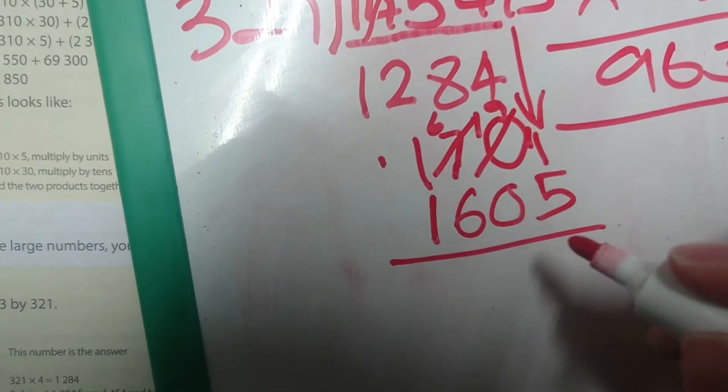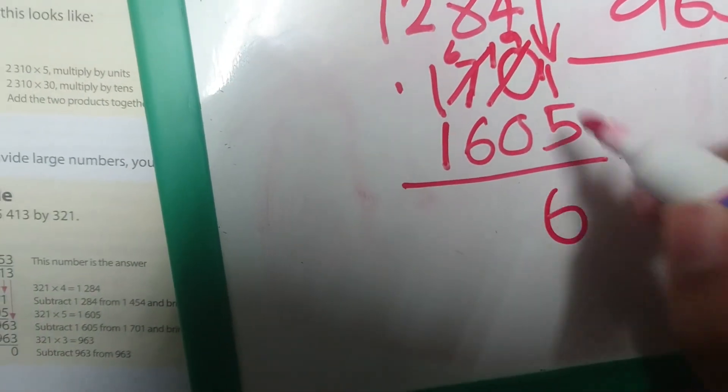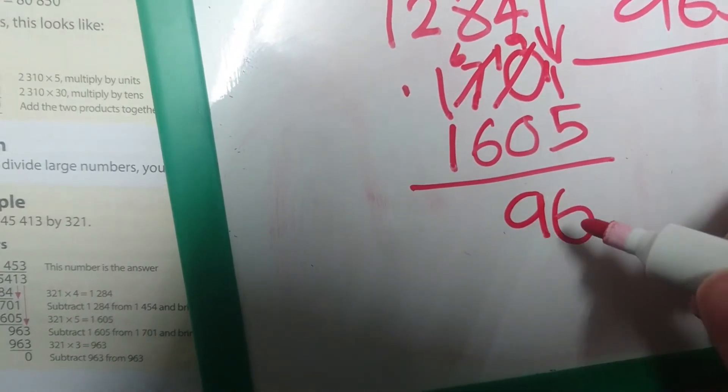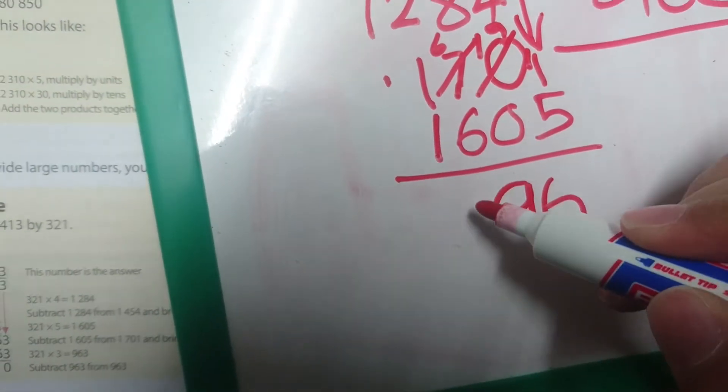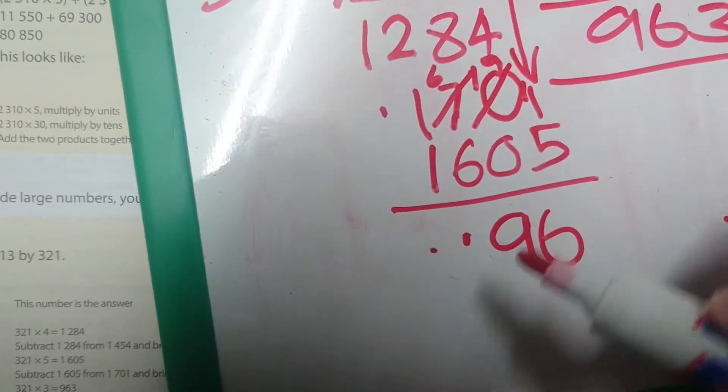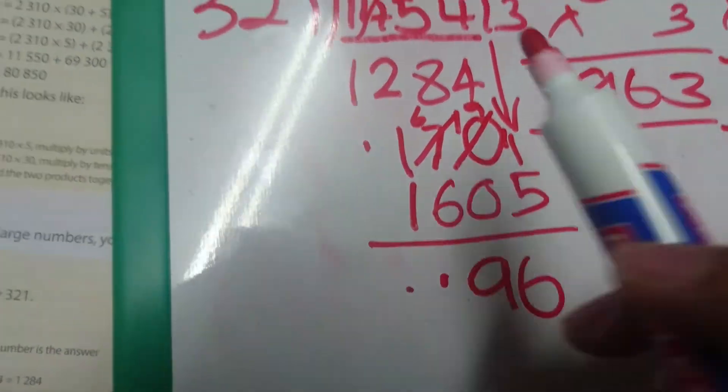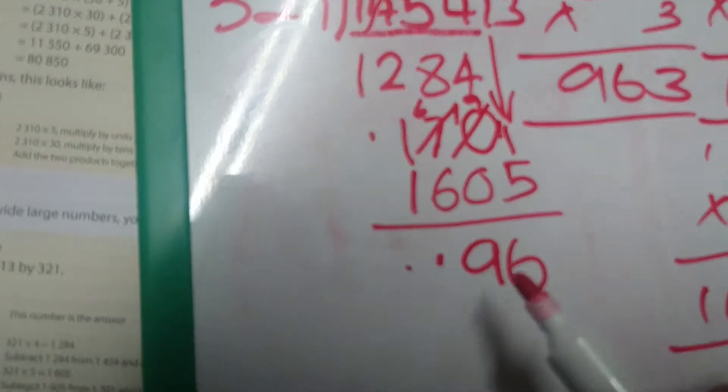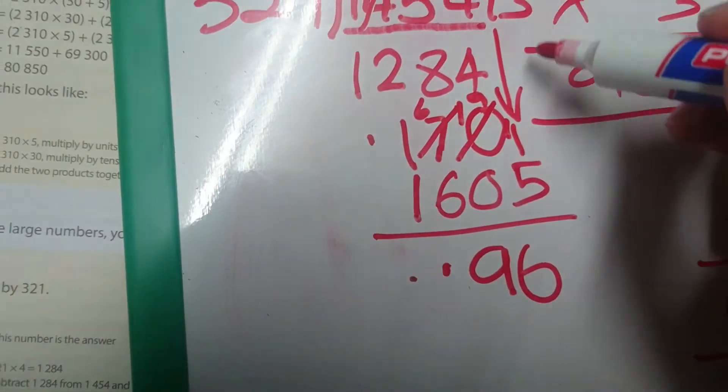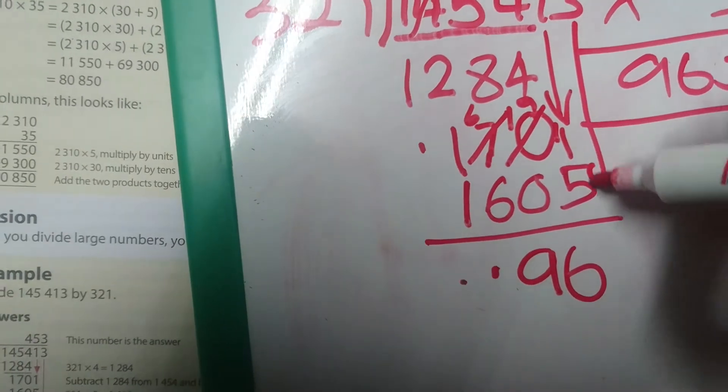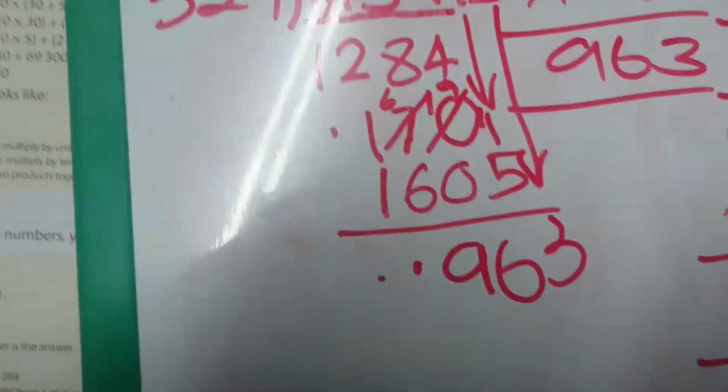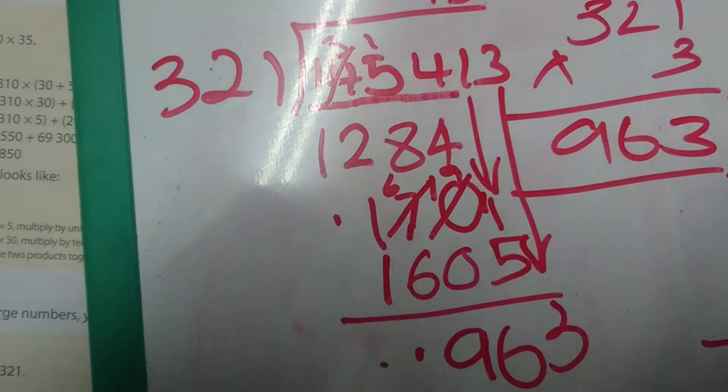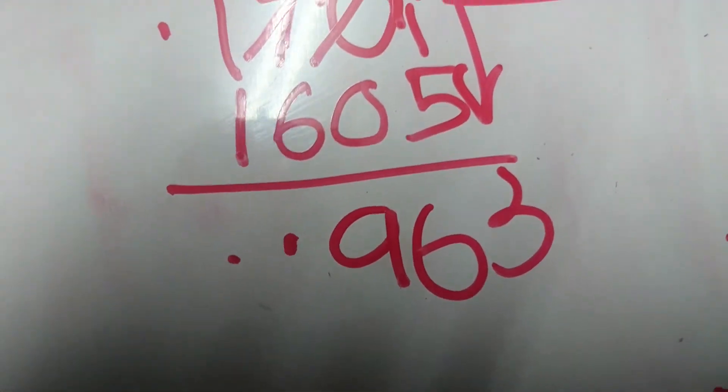So 11 minus 5 is 6, 9 minus 0 is 9, 6 minus 6 is 0, 1 minus 1 is 0. We do not have to put it down. 96. How many times can 321 go into 96? Cannot because it is too small. We still have one last number that we can take down, so we are going to bring down that 3.